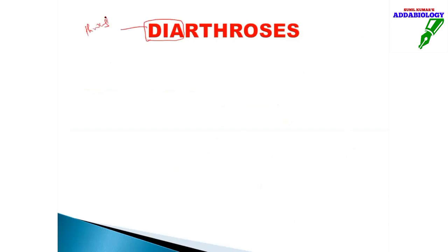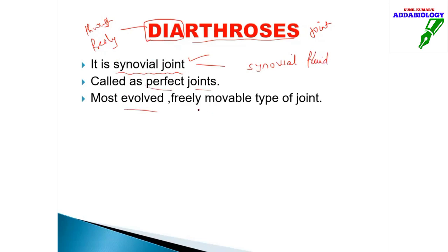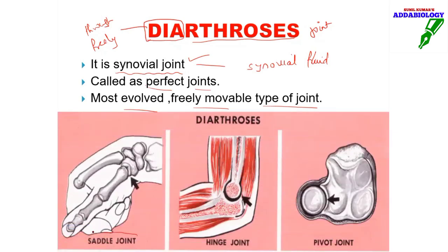The most important joint is diarthrosis — 'dia' means through, indicating freely movable joints. There are many types: the first is the synovial joint, filled with synovial fluid, also called the perfect joint and the most evolved type. Examples include the saddle joint (thumb), hinge joint (elbow), pivot joint (skull), and various others — any bone that moves more than 90 degrees is in the category of diarthrosis.